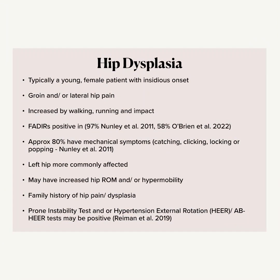Hip dysplasia is typically going to be seen in a young female patient with an insidious onset. They're frequently going to describe groin pain, maybe with some lateral hip pain as well. It's often aggravated by walking, running, and impact, and may also be aggravated by pivoting movements and prolonged positions like sitting. Probably the most useful test we have is the FADIR test — Nunley et al found 97% of patients had pain with flexion adduction internal rotation, while a larger more recent review found about 58%.